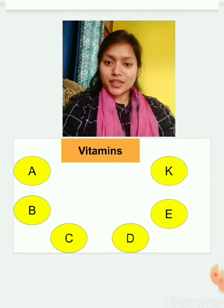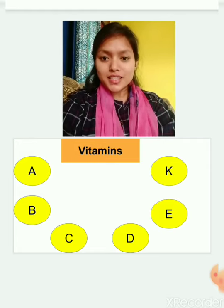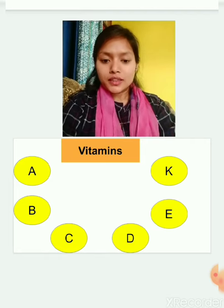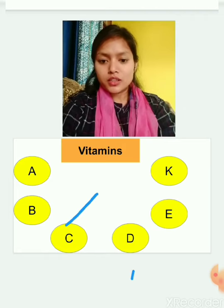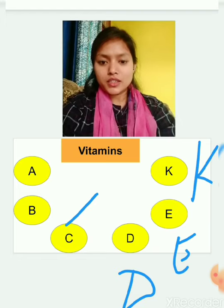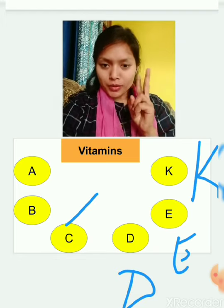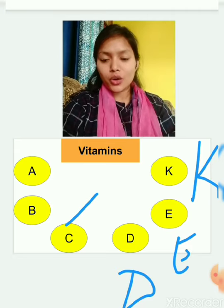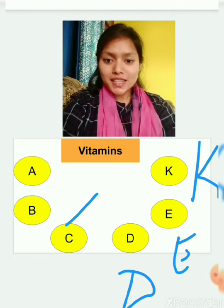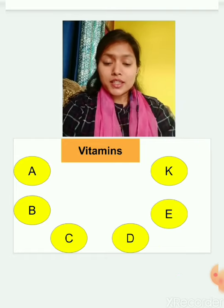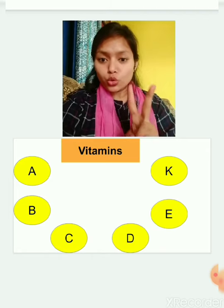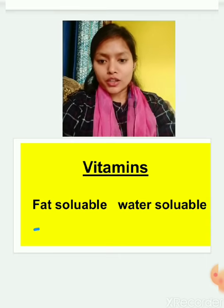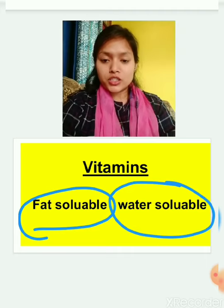Vitamins are of six types: vitamin A, vitamin B, vitamin C, vitamin D, vitamin E, and vitamin K — vitamin F is not there. These six vitamins are further classified into two groups: water-soluble and fat-soluble. Fat-soluble vitamins are vitamin A, D, E, and K. Vitamin B and vitamin C are water-soluble.